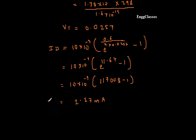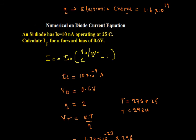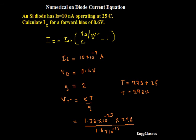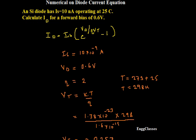The diode current ID is equal to 1.17 milliamps. This is how we get the diode current. This is how we solve a numerical on diode current equation. Few numericals will be given and one must be able to solve them using the equation. In the videos to come, we will consider few more numericals on diode current equation. Subscribe to our channel NG Classes for more videos on basic electronics. Thank you everyone for watching.